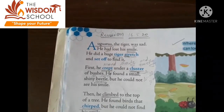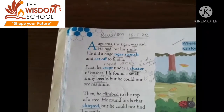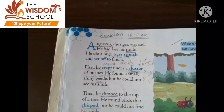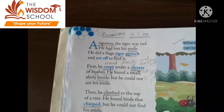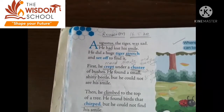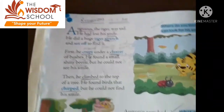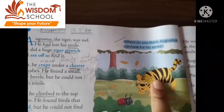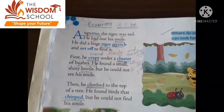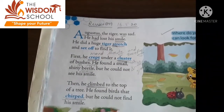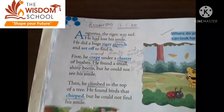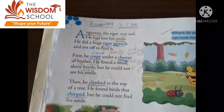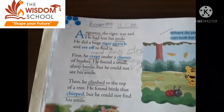He found a small, shiny beetle. Found means kisi cheez ka milna. Usne kya mila? Ek small, ek choti si shiny — shiny means jis mein chamak ho — ek beetle mili. Beetle means insect, ek chota sa kiira. But you can see, this is the beetle. Yeh kaun hai? Beetle hai. Aur yeh kaun hai? Hamara tiger. But he could not see his smile. Lekin usse apni smile nahi mili.